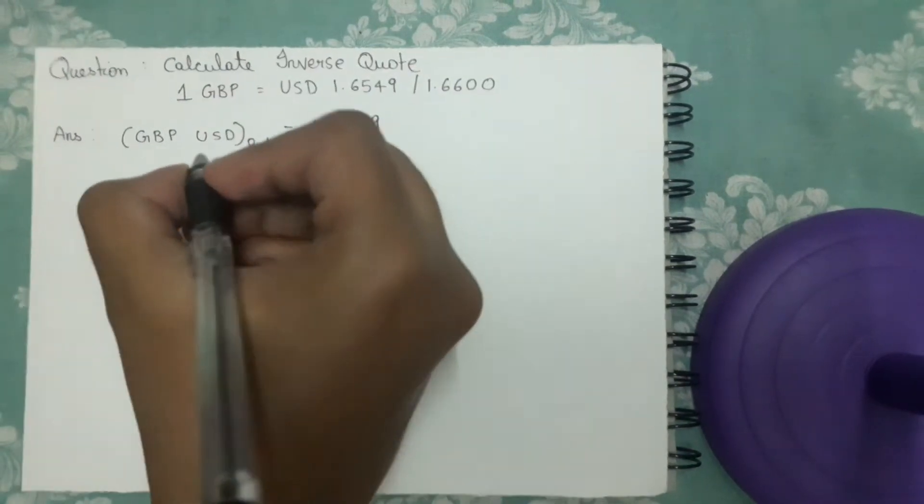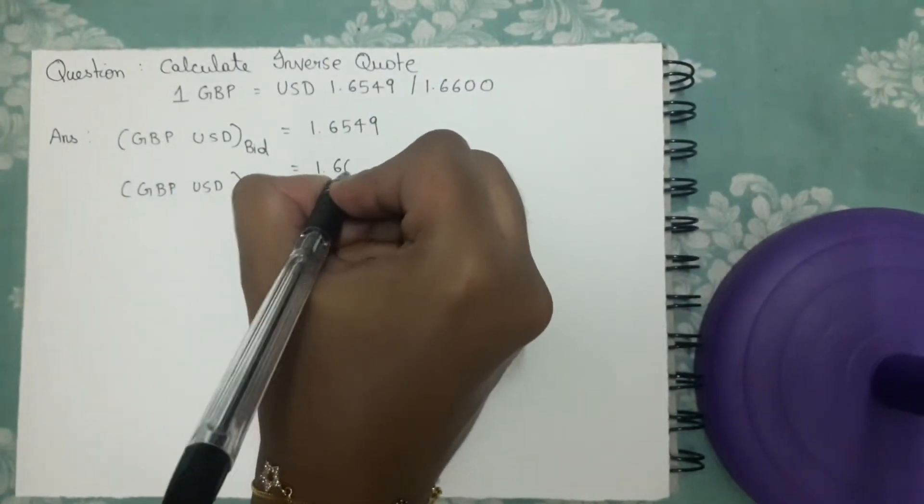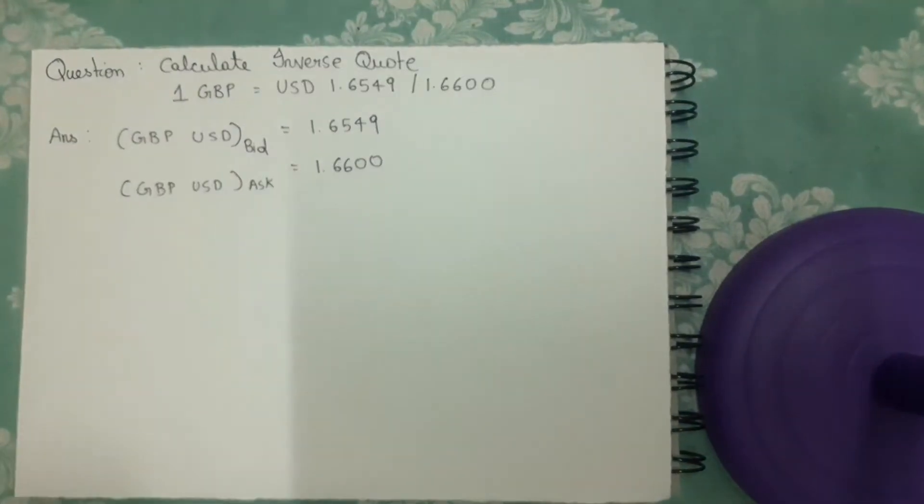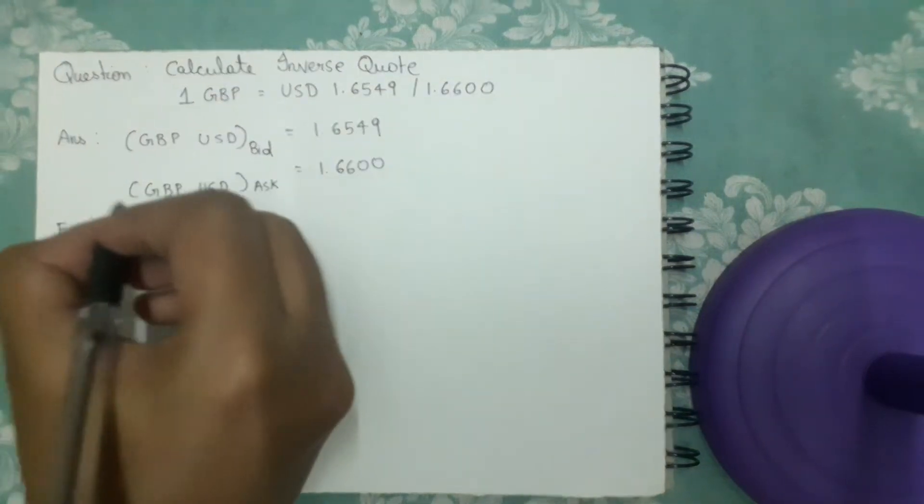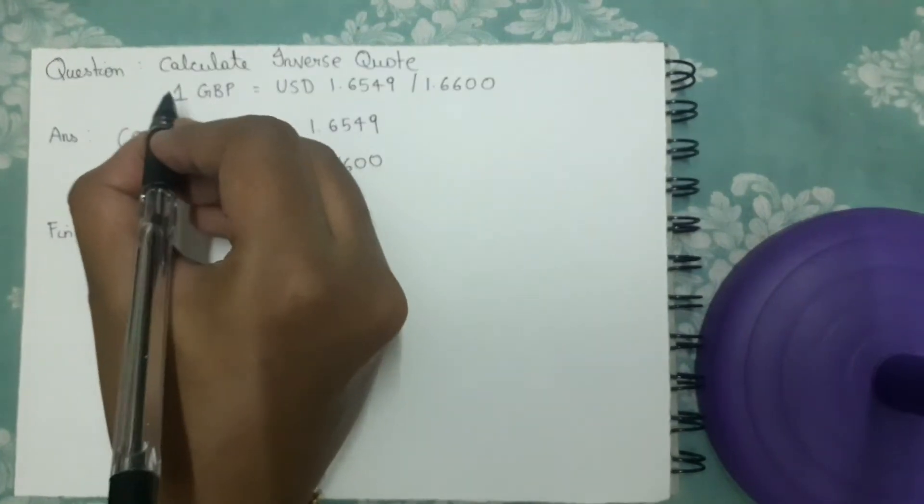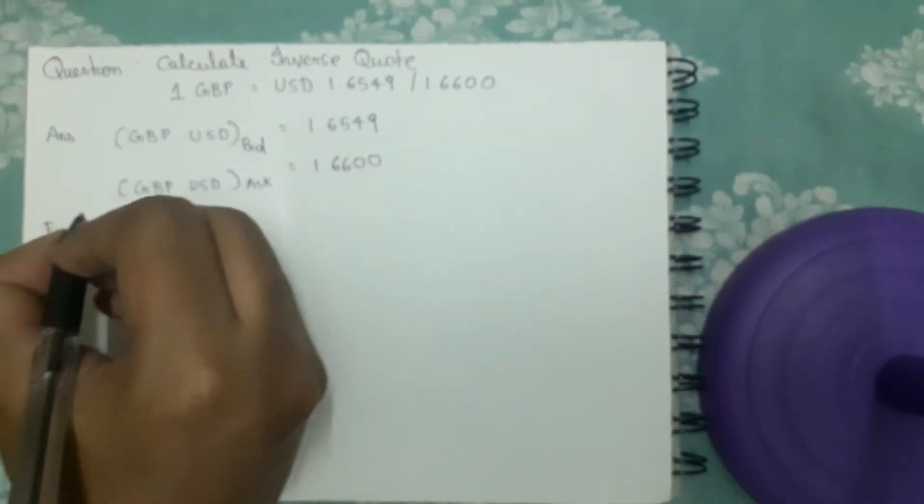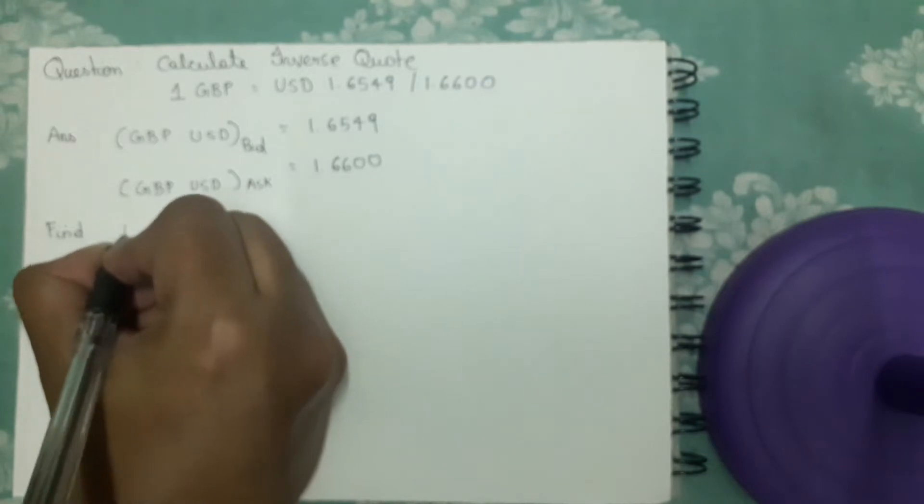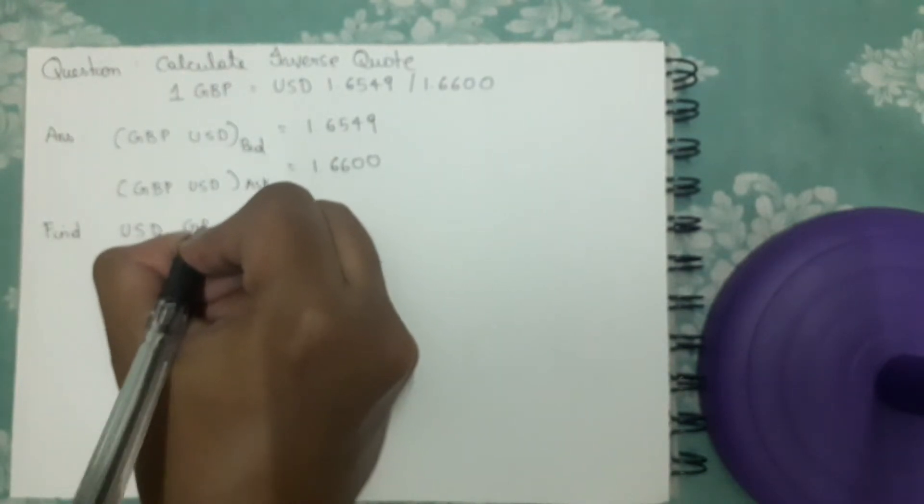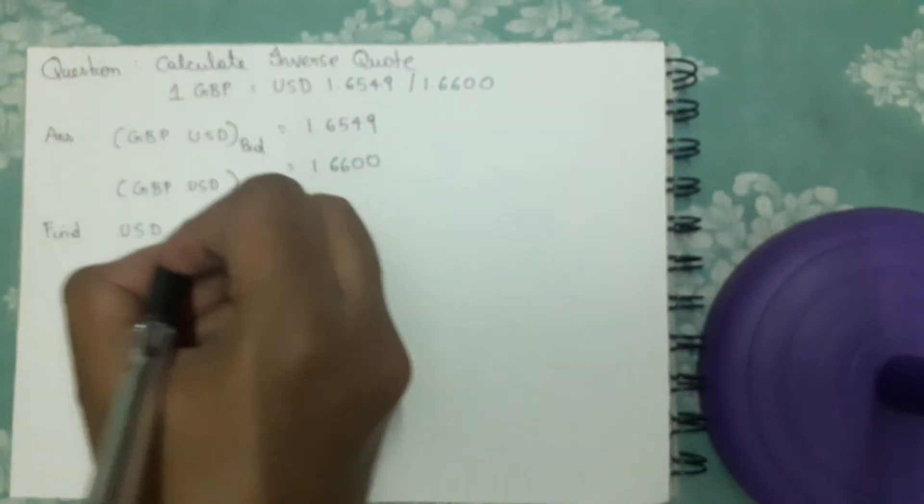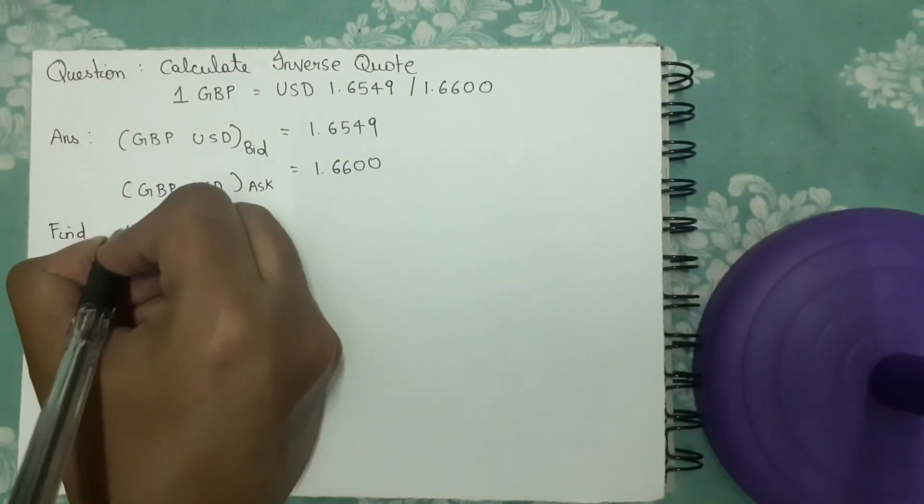Now we have to find the inverse quote. Inverse quote means here it is 1 GBP equals USD. Now we have to find it in USD/GBP order, that is 1 USD would be equal to how much GBP. This is what we have to find.